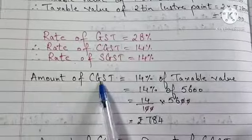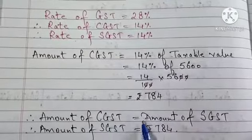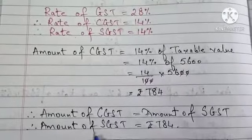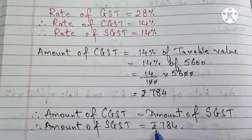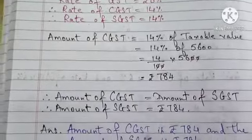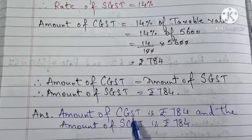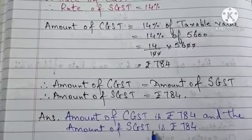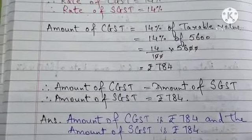Now whatever your amount of CGST, that will be equal to the amount of SGST. Therefore, amount of CGST is equal to Rs. 784. So final answer, amount of CGST is Rs. 784 and amount of SGST is Rs. 784.